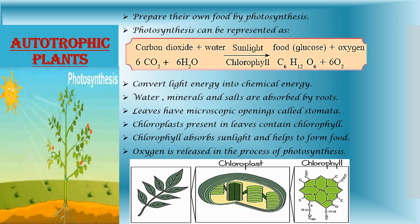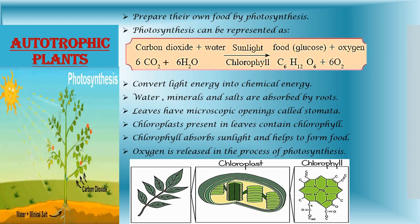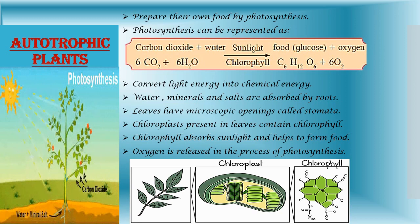Chlorophyll absorbs sunlight and helps to convert carbon dioxide and water into food, and oxygen is released during the process of photosynthesis. Photosynthesis also takes place in some other parts like the green stem, as they contain chlorophyll.